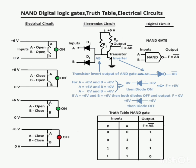For NAND gate, a truth table is also given here. Output of NAND gate is high for any input A or B low, and output F of NAND gate is low only if both inputs A and B are high.